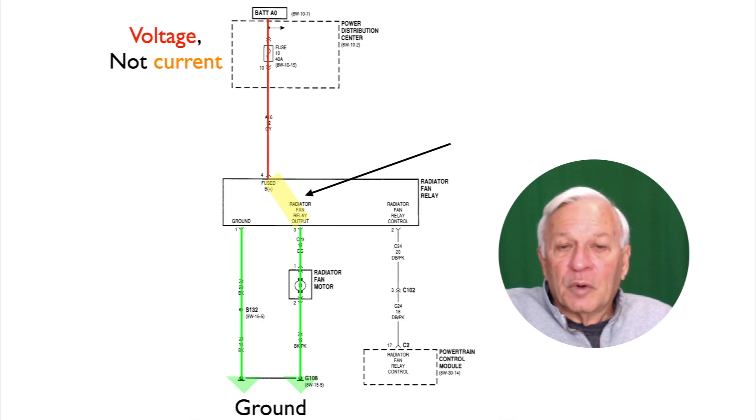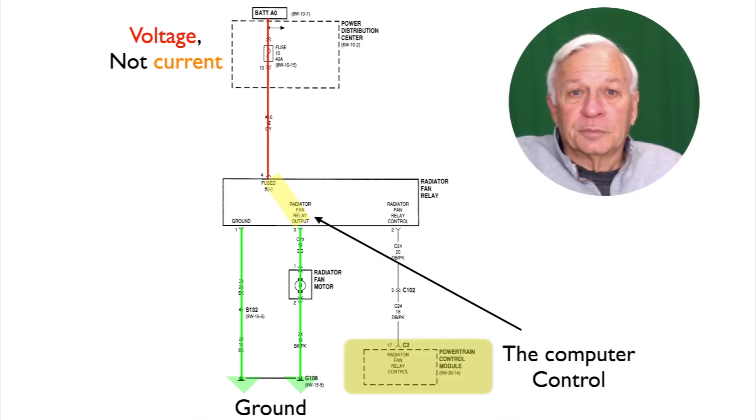We know that power and ground must connect if that load is going to work. So what connects them? Well the computer control connects them when it commands it on.